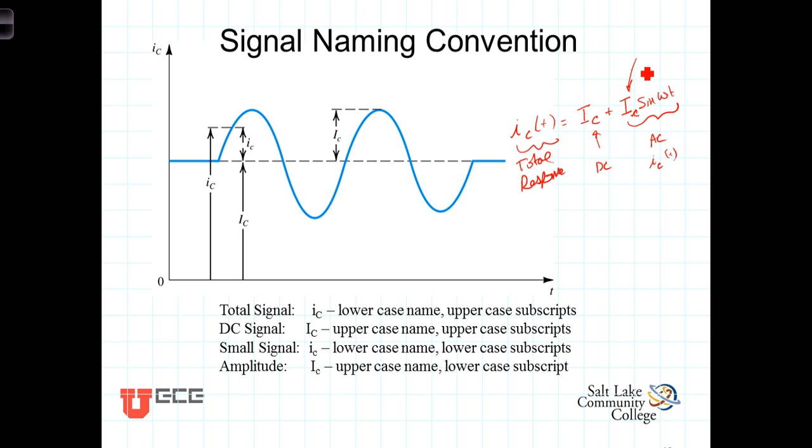And then we have the amplitude of the AC-varying signal that has the uppercase name, lowercase subscript. And we'll consistently use this nomenclature throughout the book.